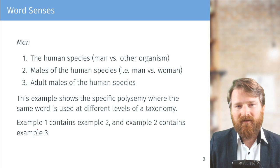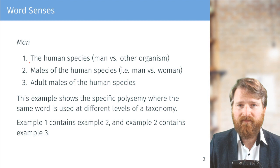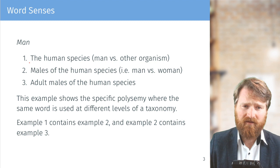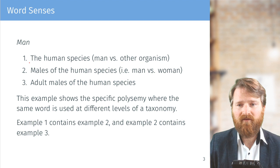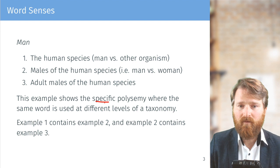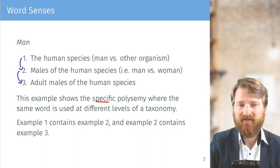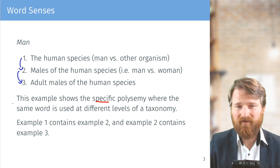Another example of polysemy is the word 'man'. The first sense is the human species — men versus other organisms. The second sense is the male of the human species — men versus women. The third sense is adults of the human species — a boy versus a man. This shows polysemy where the same word is used at different levels of a taxonomy, so one sense actually contains another.